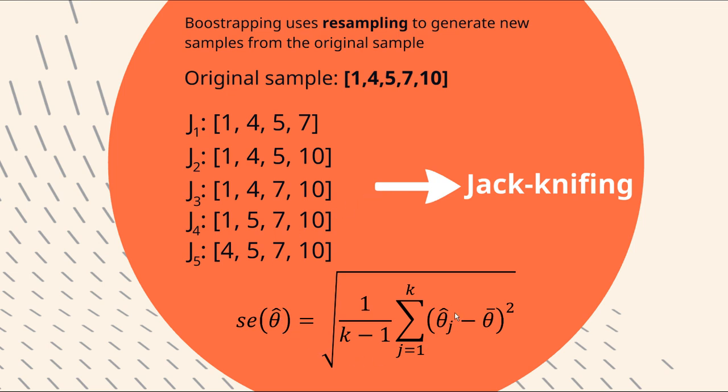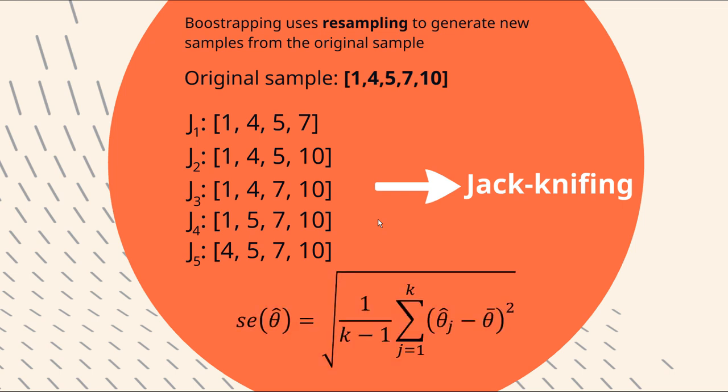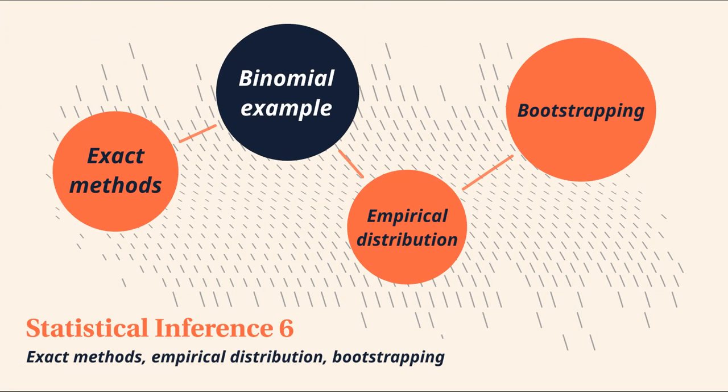And again, the standard error is just calculated in exactly the same way. So it's as simple as that. Now in this particular jackknifing example, I've only taken one observation out for each jackknifed sample. But in reality, you could take as many observations out as you'd like, as long as it's consistent for every jackknifed sample.